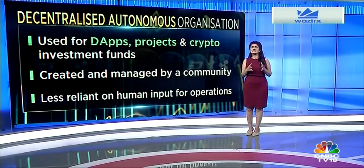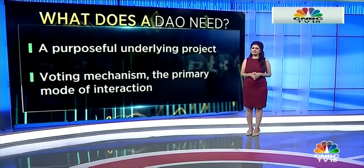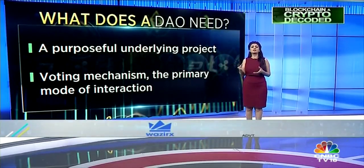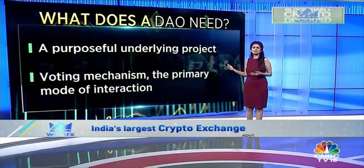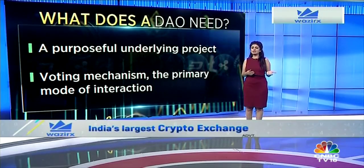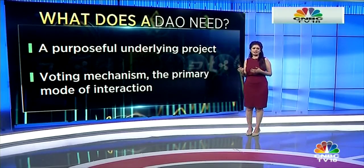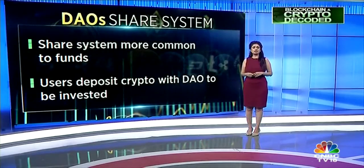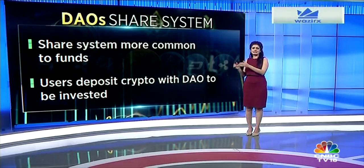Among other things, a successful DAO needs a strong purpose and a good underlying project. Each DAO needs a voting mechanism — this is the primary way people interact with the DAO and make changes. You could create your own voting mechanism or use a third-party provider. A DAO also needs a governance token or share system. A share system is more common to funds where users deposit cryptocurrencies with the DAO to be invested.